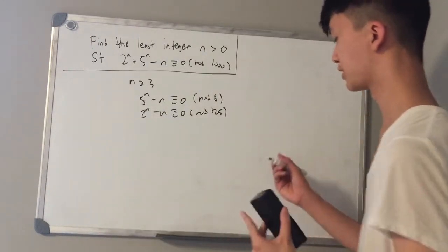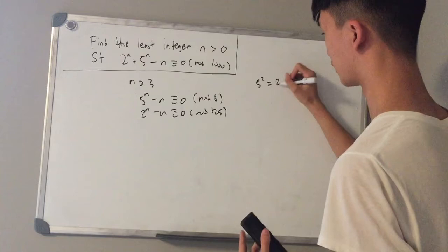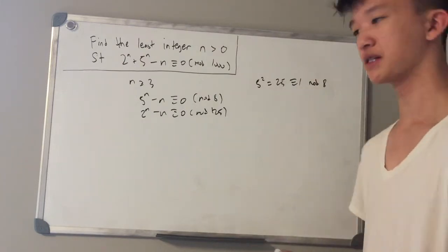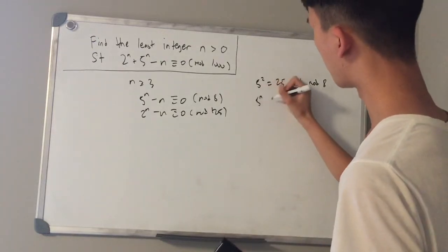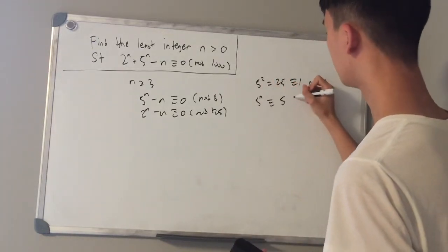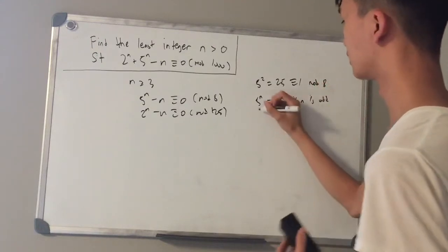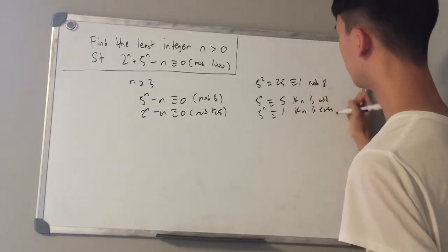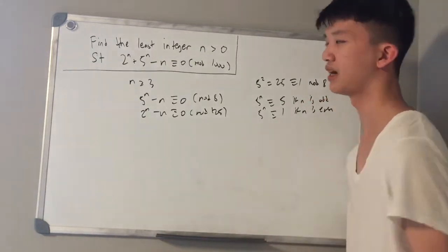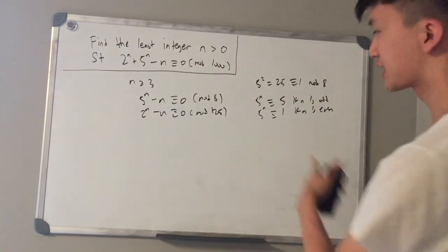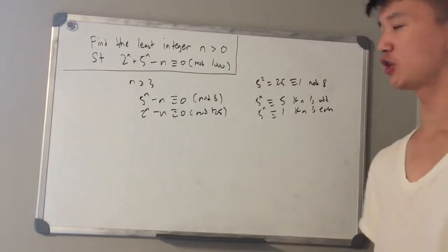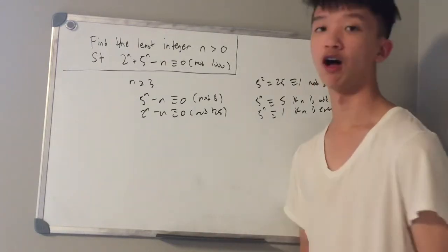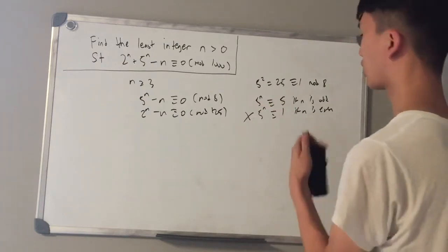Now let's look at the first equation. 5 squared is equal to 25, which is congruent to 1 mod 8, and so we see a cycle: 5 to the power of n is congruent to 5 if n is odd, and congruent to 1 if n is even. We're looking for a value such that 5 to the power of n minus n is equal to 0 mod 8. The even case cannot work because if 5 to the power of n is congruent to 1 mod 8 and n is even, then 5 to the power of n minus n will be odd.